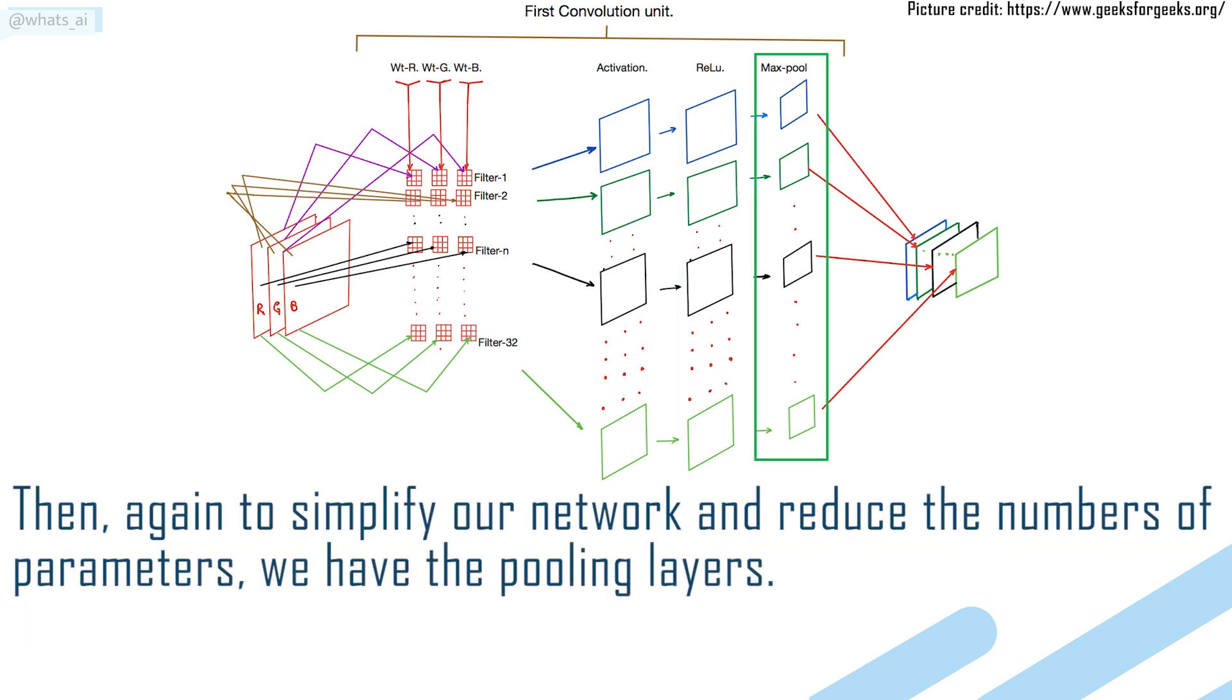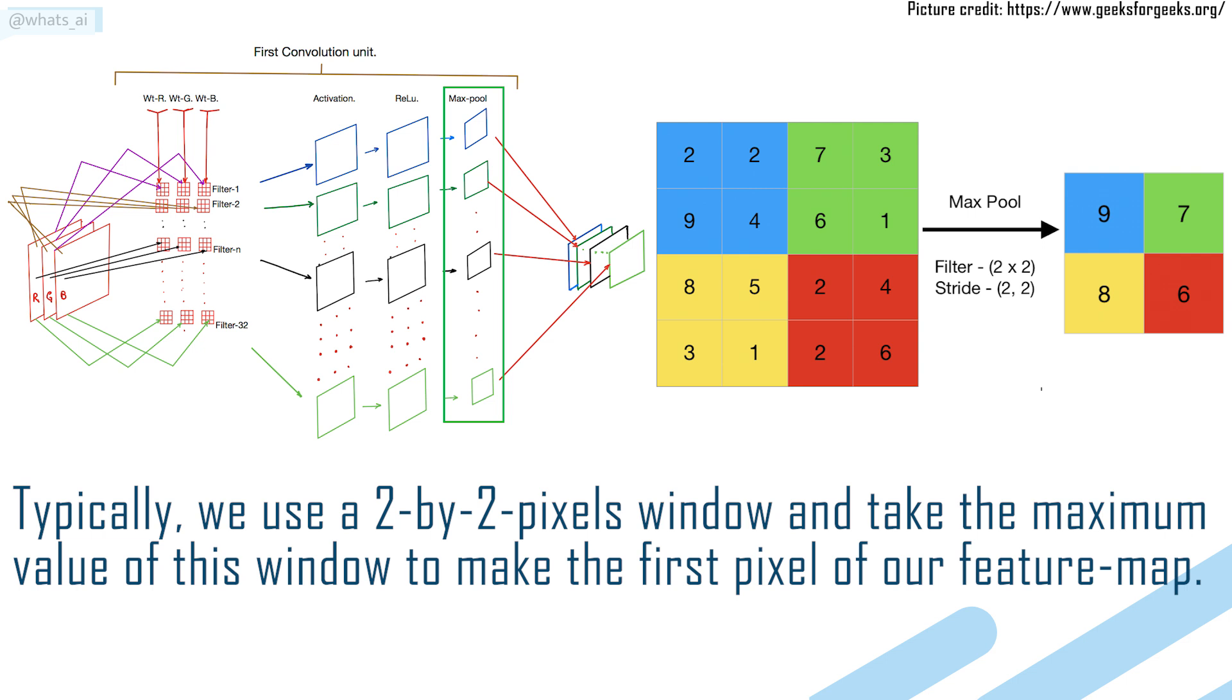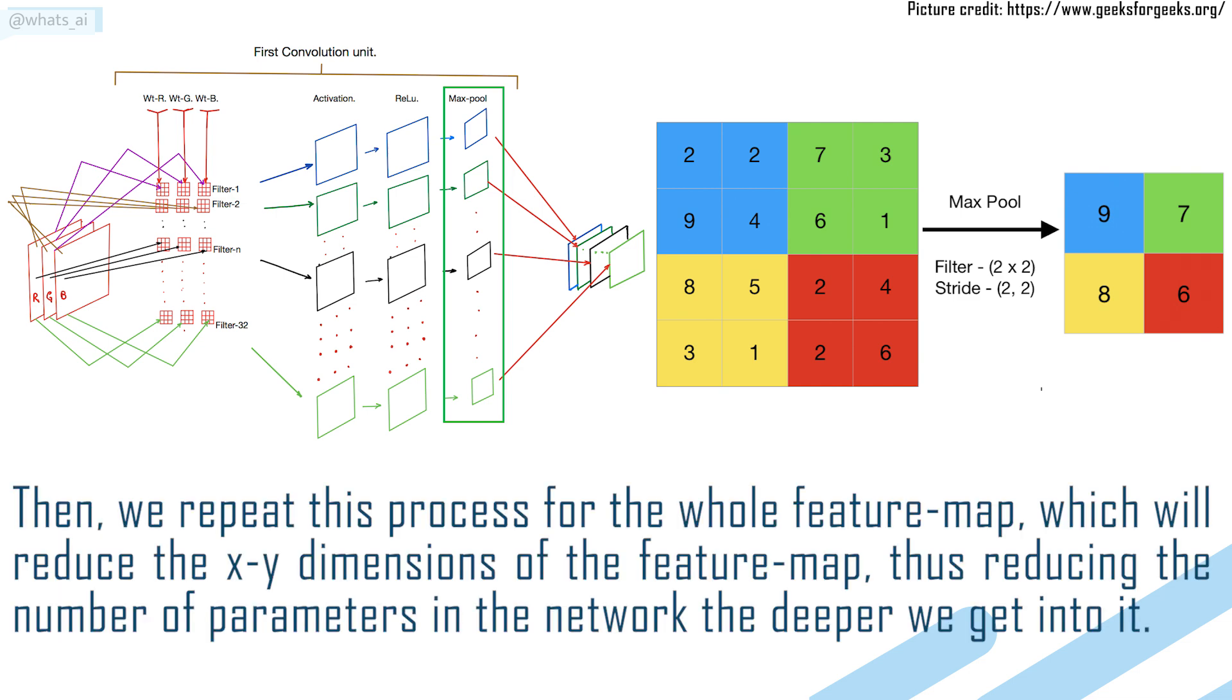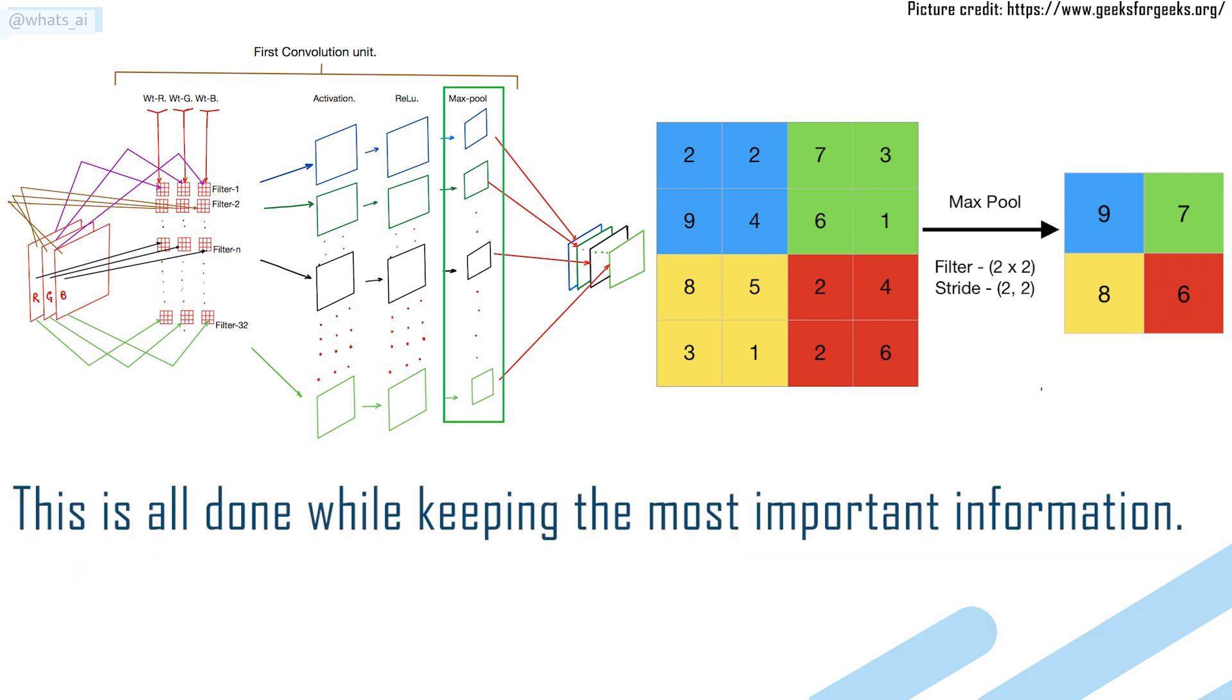Then again, to simplify our network and reduce the number of parameters, we have the pooling layers. Typically, we use a 2x2 pixels window and take the maximum value of this window to make the first pixel of our feature map. This is known as max pooling. Then we repeat this process for the whole feature map, which will reduce the x-y dimensions of the feature map, thus reducing the number of parameters in the network the deeper we get into it. This is all done while keeping the most important information.